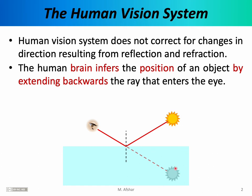Of course, once you recognize that bright object as the sun, then your conscious brain will correct and will suggest that the sun cannot be in the swimming pool — it must be up in the sky, I'm seeing a reflection. However, your first instinct is to see or perceive a bright object under the water.